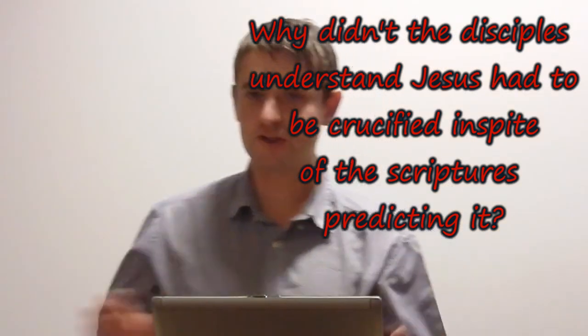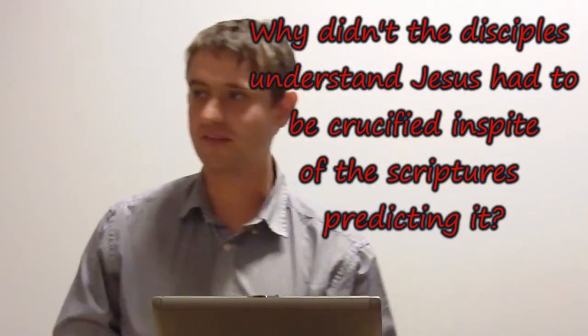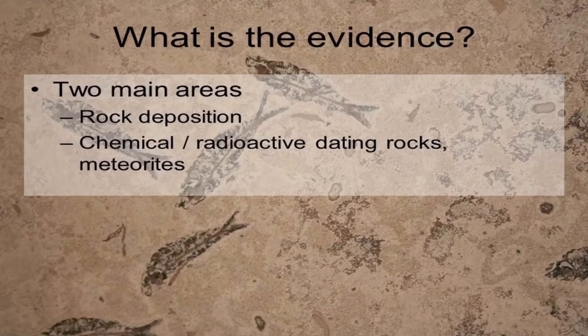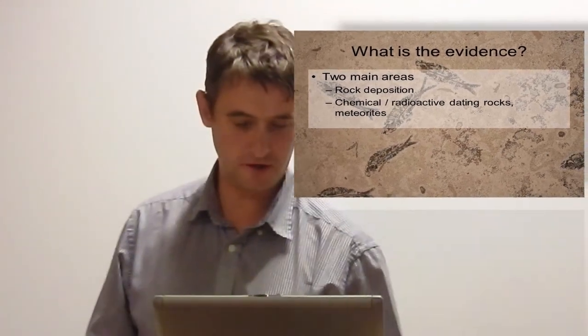I'm probably going to have to whip through this and do it no justice at all. I hadn't really thought about this too much before about two days ago, so bear that in mind. Okay, how do you explain the evidence of the age of the earth in the light of the Bible record? What is the evidence of the age of the earth that might cause us problems? There are two main areas. The first is about rock deposition — how sedimentary rocks are built up — and the second is about chemical composition of rocks and meteorites, carbon dating and stuff like that. That's a bit hard for us to visualise, so I'm going to look very much at the first one.